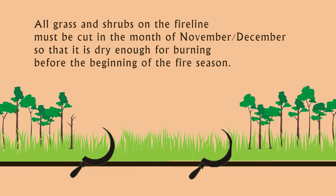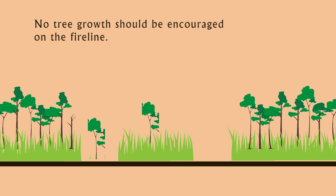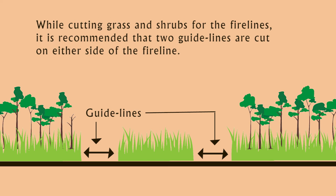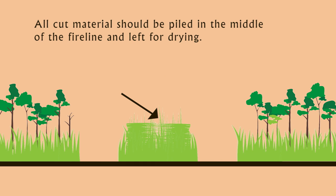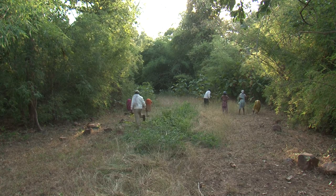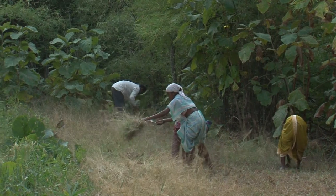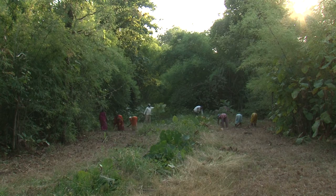All grass and shrubs on the fire lines must be cut in the month of November–December, so that they are dry enough for burning before the beginning of the fire season. No tree growth should be encouraged on the fire line. While cutting grass and shrubs, it is recommended that two guidelines be cut on either side of the fire line. The width of the guideline should depend upon the height of the vegetation alongside. All cut materials should be piled in the middle of the fire line and left for drying. Here on an external fire line, with trees and bamboo clumps on both sides, the guidelines are being cut and the cut vegetative material is piled in the middle.